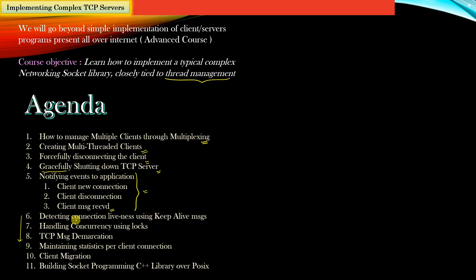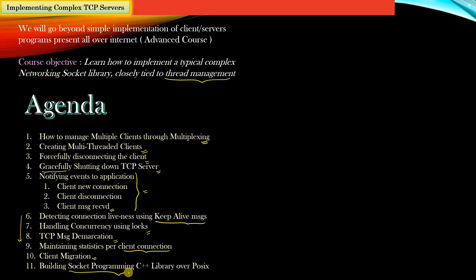We will then proceed into advanced topics such as how a server detects connection liveness using the concept of keep-alive messages. Since our library will be multi-threaded, we will handle concurrency using locks. We will also implement advanced TCP socket programming concepts such as TCP message demarcation and client migration, and we will maintain per-client statistics. The end result of this course is a socket programming C++ library built over POSIX standard APIs.